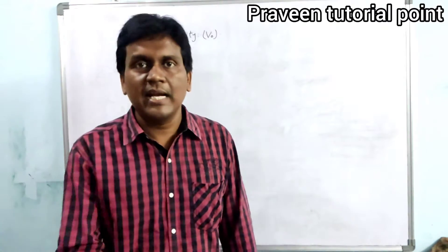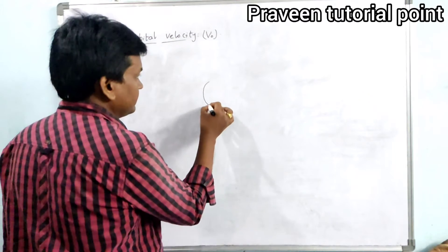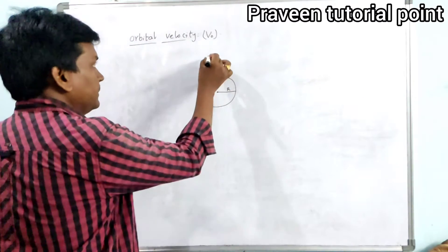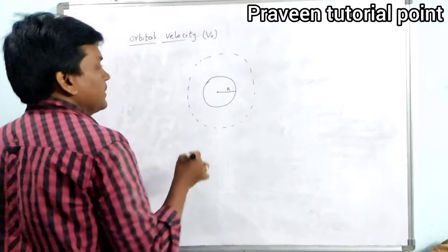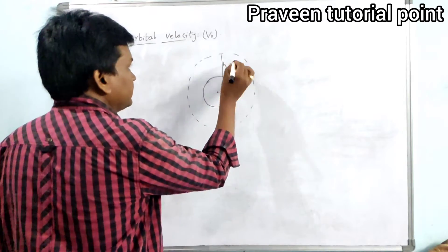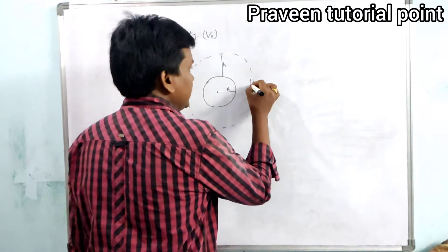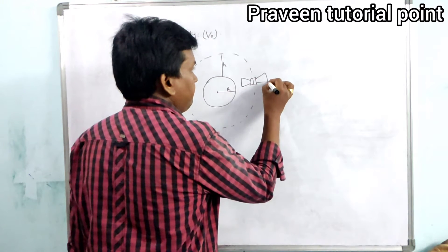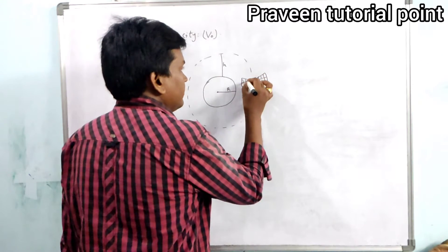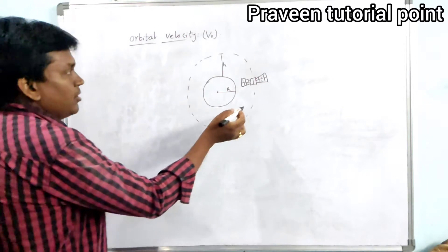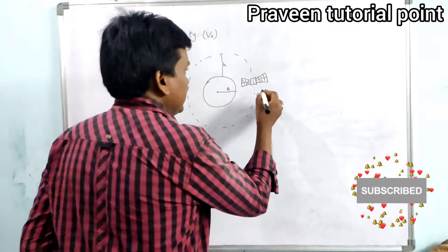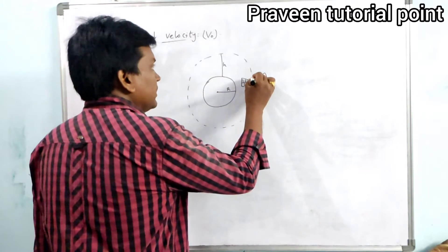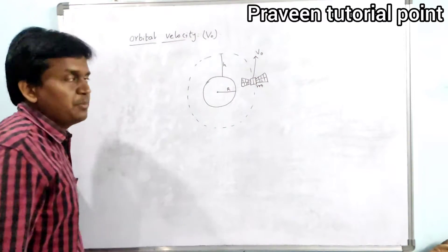An object, a body, or it may be a satellite. Let us consider this is the Earth which is having a radius r, and at a certain orbit at height h. In this orbit, consider a satellite revolving around the Earth. This satellite is having a mass m and it is moving with the minimum velocity called orbital velocity V₀.